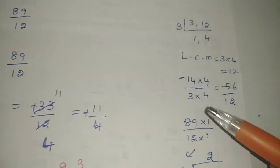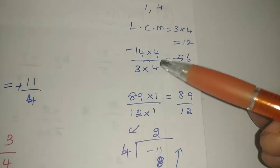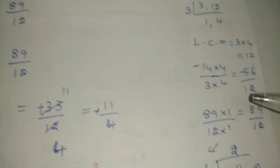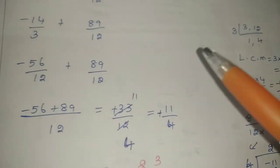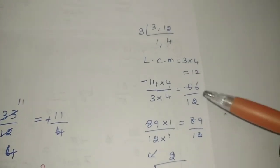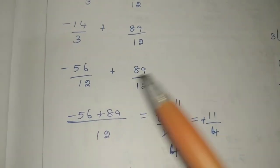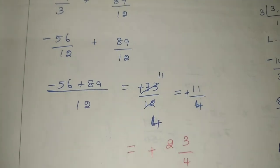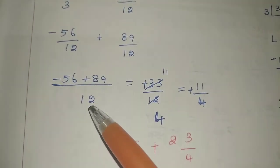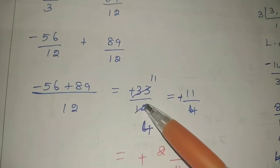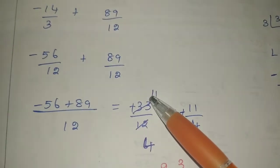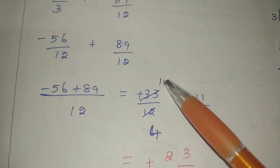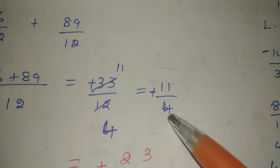Now: 14 by 3 is the first value. 12 divided by 3 is 4, so multiply numerator by 4. So 14 × 4 is 56. Minus 2 plus minus. The value of 12 is already set. So the first value is 56 by 12. Now the second value: minus 56 by 12 plus 89 by 12. If we reduce: minus 56 plus 89 gives 33 by 12.